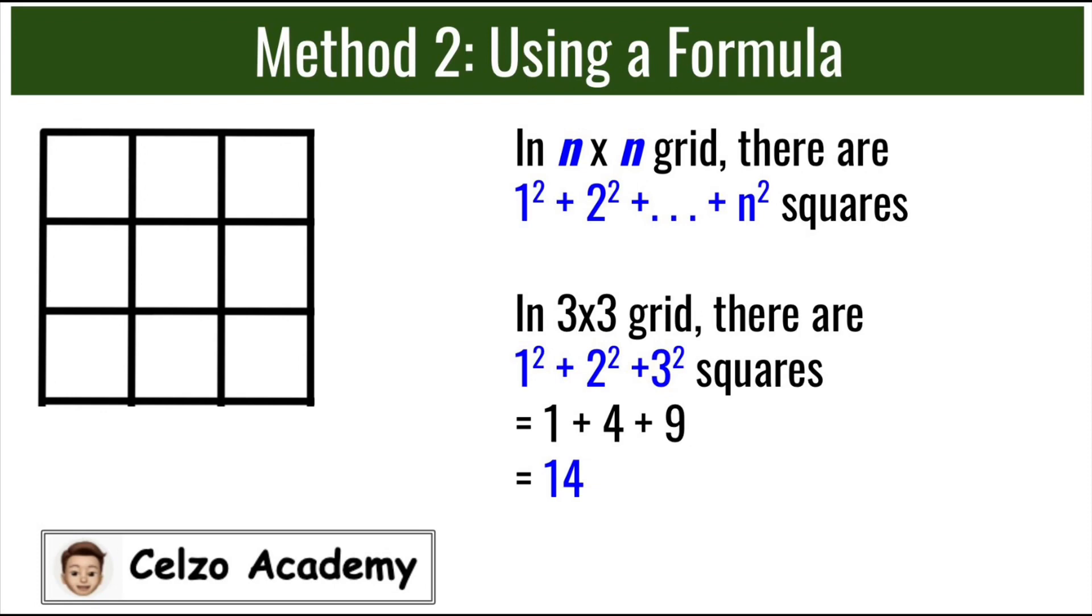If it's a 3x3 grid, using the formula, we will have 1² + 2² + 3². Simplifying this, we have 1 + 4 + 9. So we have 14 squares total.